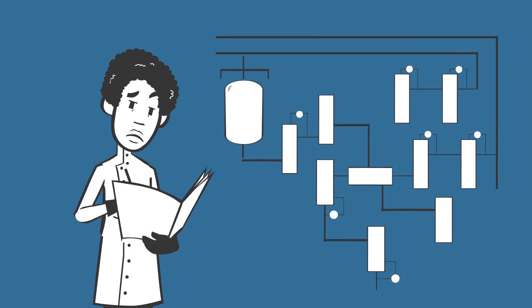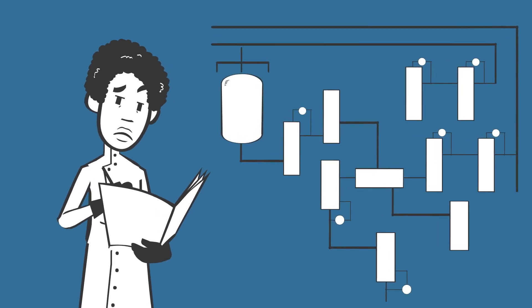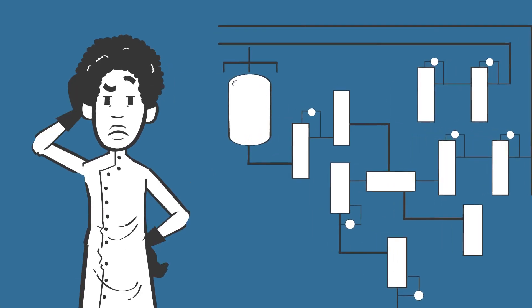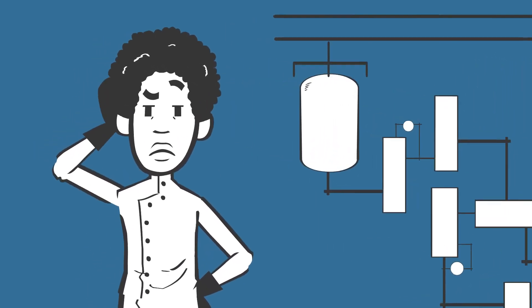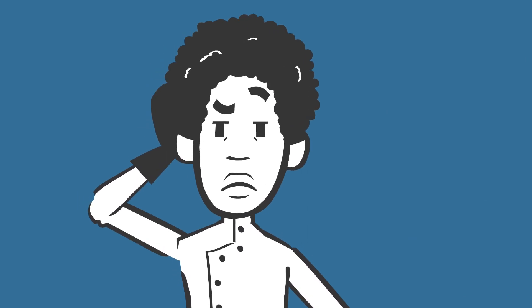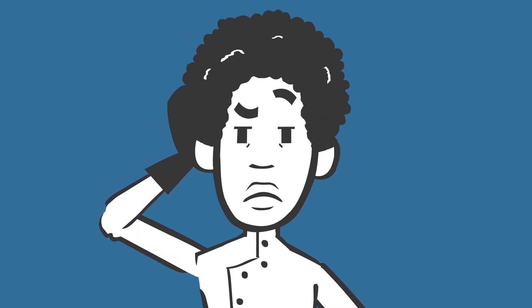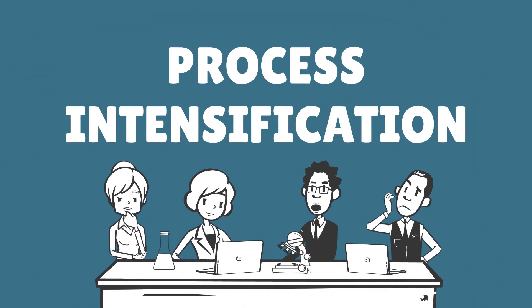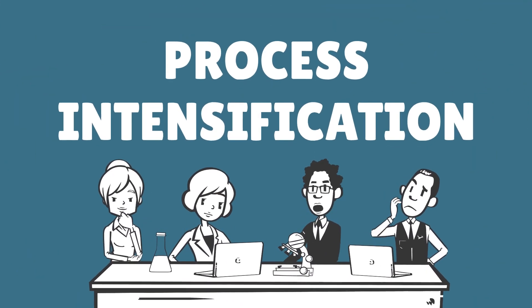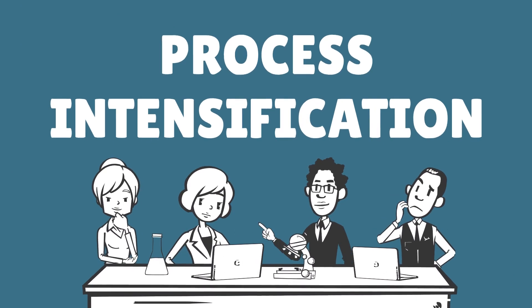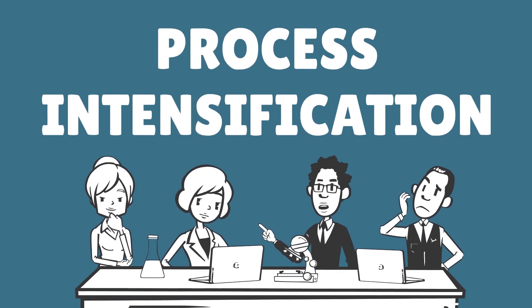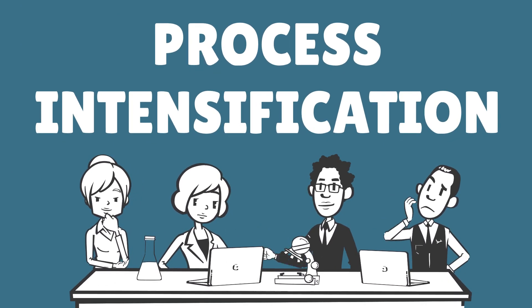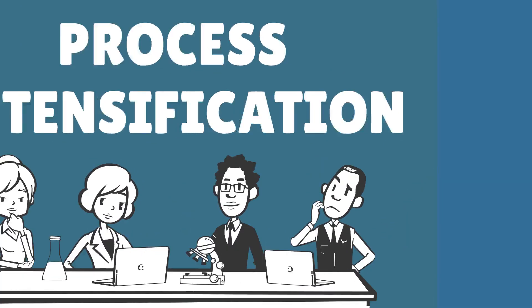Conventional unit operations have served us well, but it's time to rethink how we're designing our chemical processes. Process intensification is a new tool that allows chemical engineers to think differently about process development.